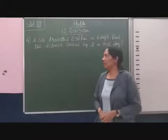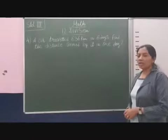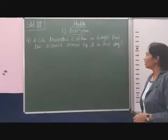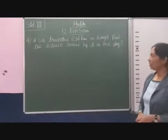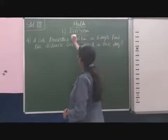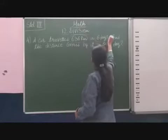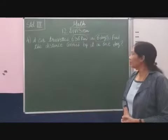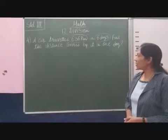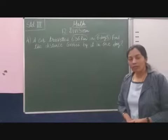Students, the next question is given. A car travelled 636 km in 6 days. So, total number of km are given. Days are given. Now, find out the distance covered by it in 1 day.